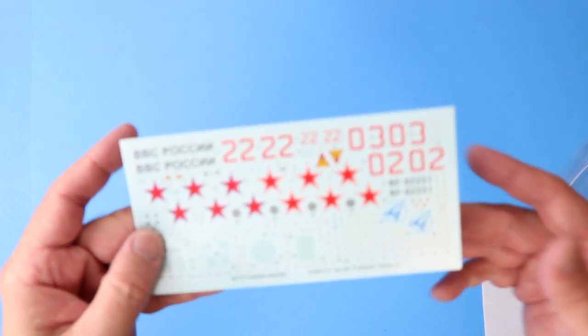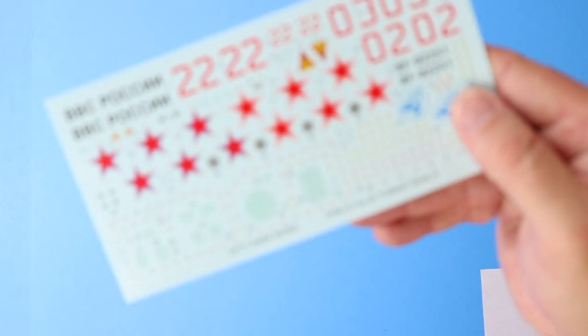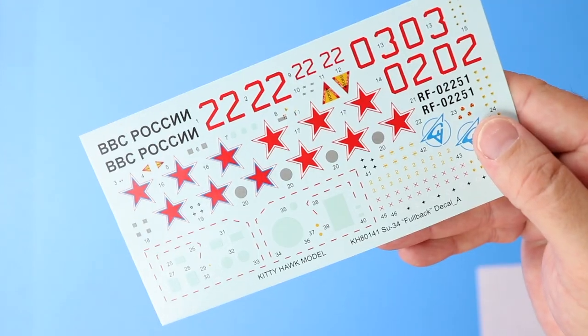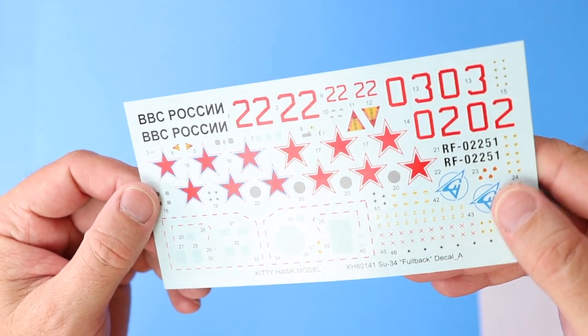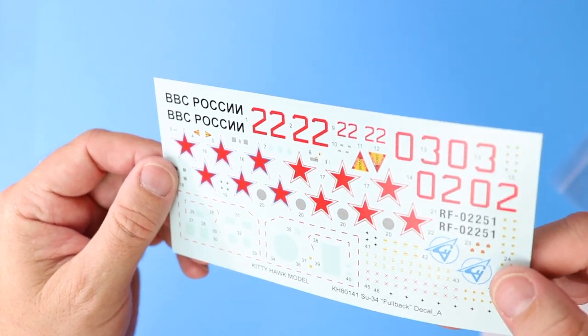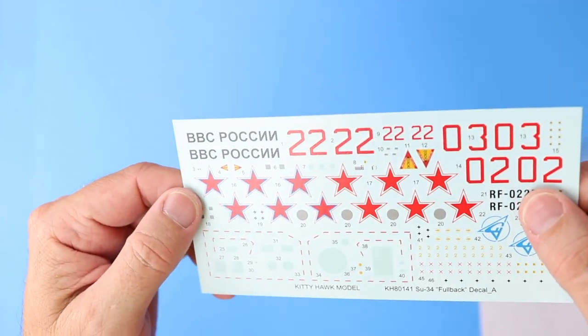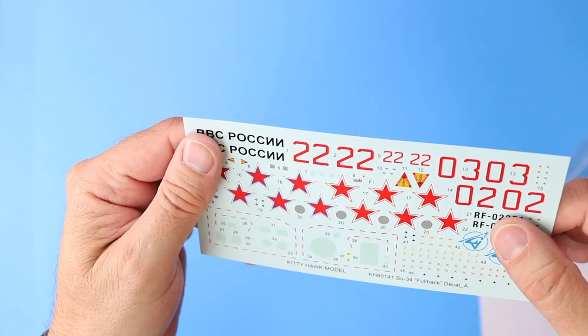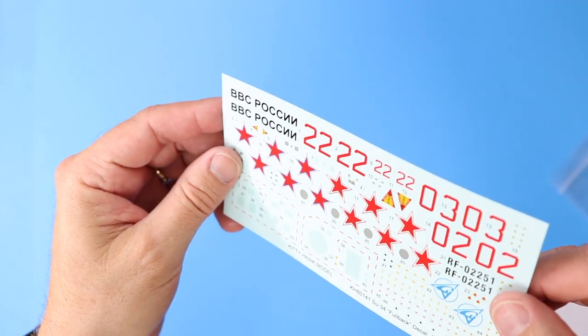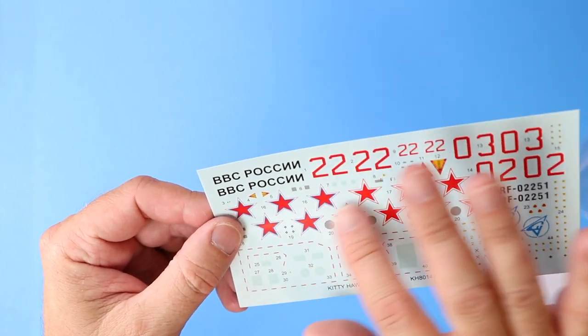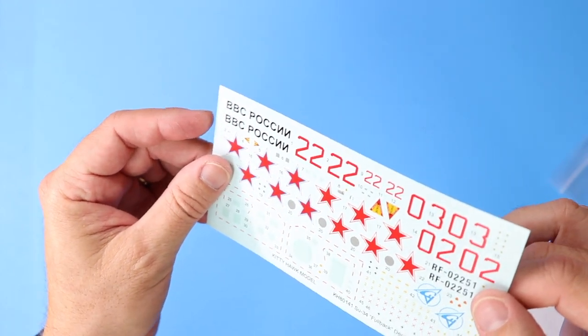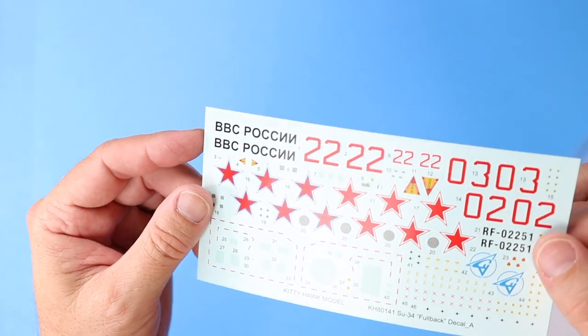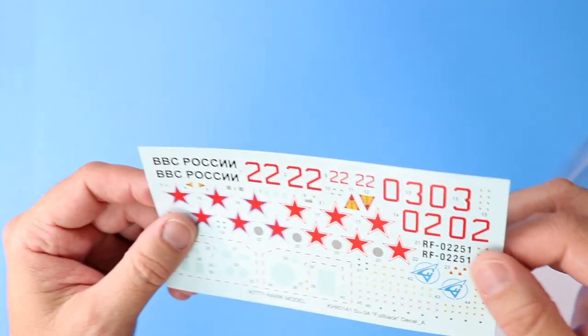Here we have the actual aircraft markings. These look really good. I don't see a lot of overlay on it. They're very, very thin. And I think these are going to lay down very nice. Beautifully done. Bright. No imperfections. The carrier film is very, very clear. Good stuff.